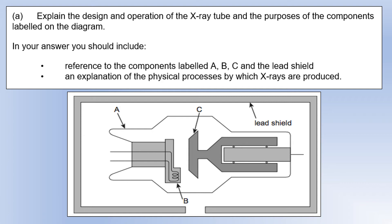In this video we're going to take a look at some practice questions for the medical physics part of the course. We're going to start off looking at x-rays and an x-ray tube which has several key parts we can use to explain how it works. There are four parts labeled A, B, C, and the lead shield, and we need to explain the physical processes which lead to x-rays being produced.